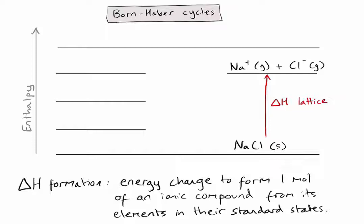In this case, if we are forming one mole of an ionic compound from its elements in their standard states, the direction of this enthalpy change is going to be going down towards our sodium chloride at the bottom. We've got sodium and chlorine forming sodium chloride, so sodium as a metal will be a solid in its standard state, and chlorine will be a diatomic gas. Because in sodium chloride there is only one chlorine, I'm going to have to use half a chlorine molecule. So the blue arrow now represents the enthalpy change of formation.